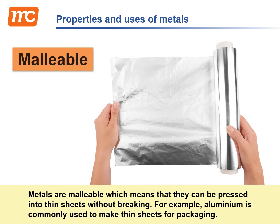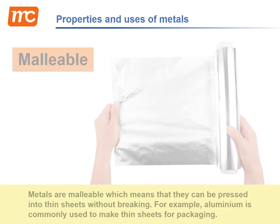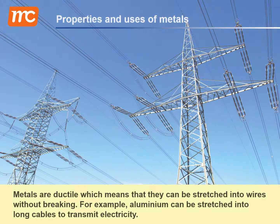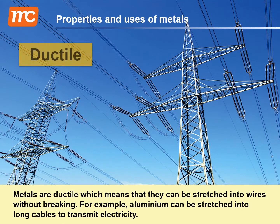Metals are malleable, which means that they can be pressed into thin sheets without breaking. For example, aluminum is commonly used to make thin sheets for packaging. Metals are also ductile, which means that they can be stretched into wires without breaking. For example, aluminum can be stretched into long cables to transmit electricity.